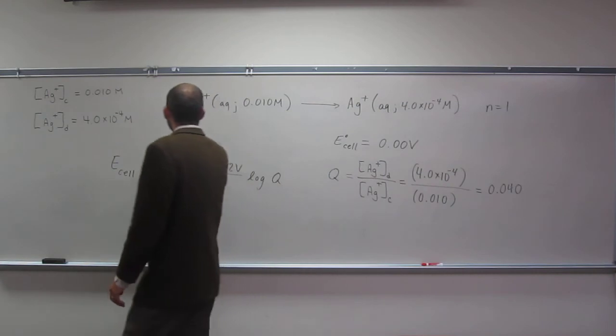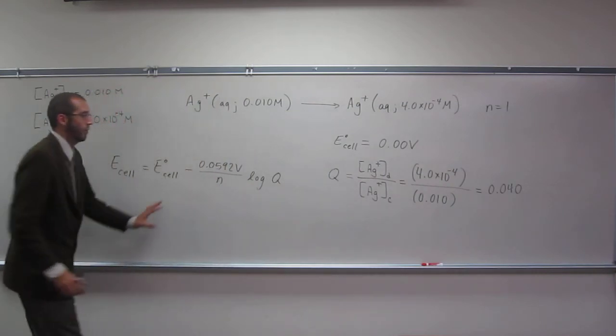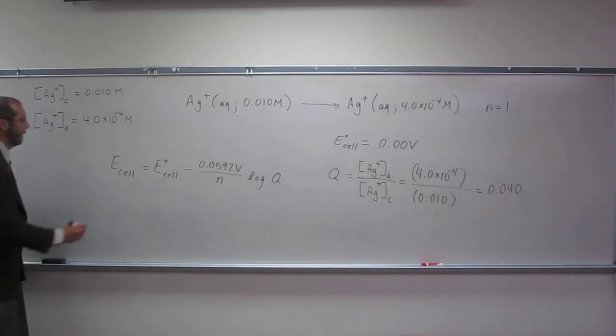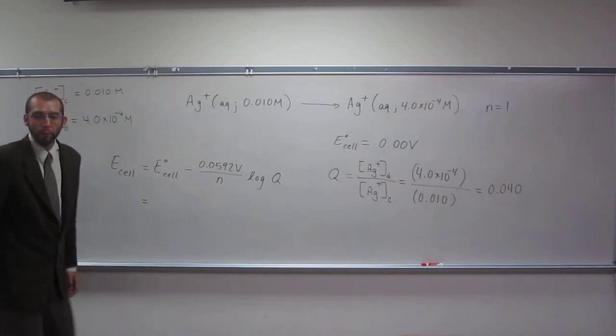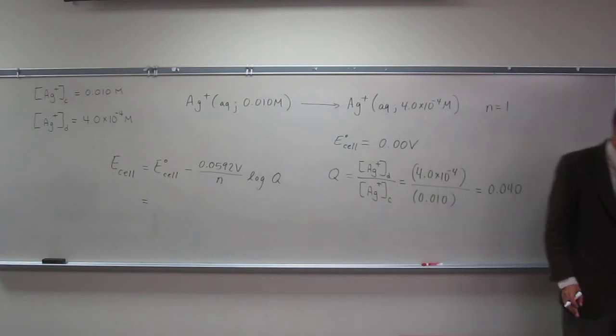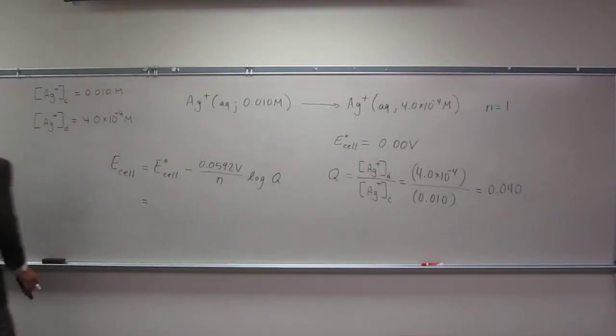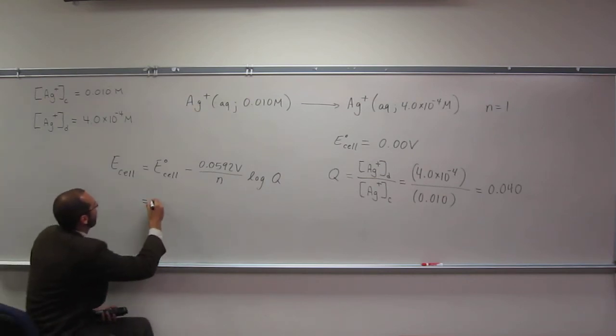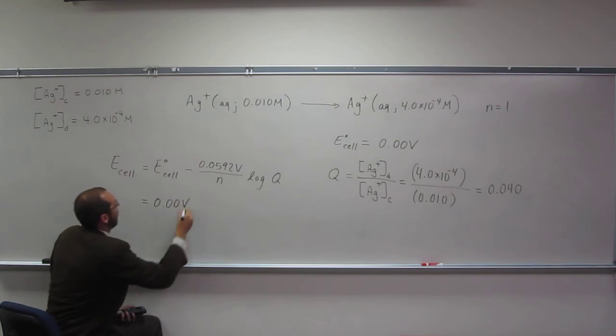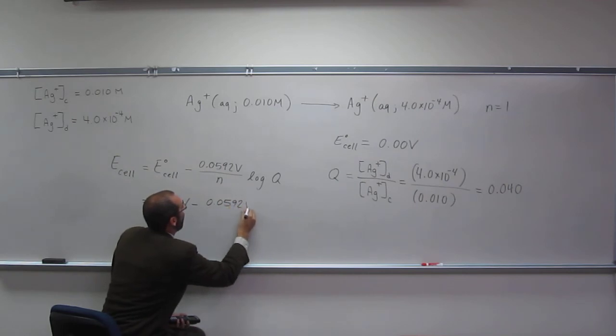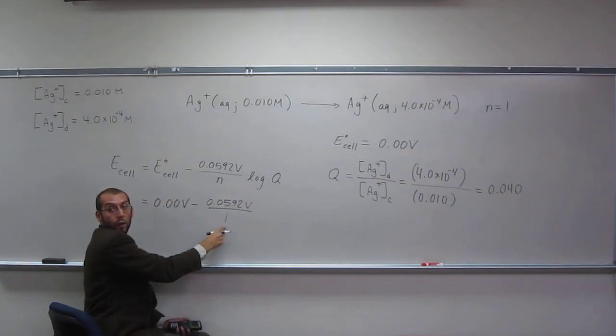So we have Q, we have cell potential, we have N. We should be able to solve what the cell potential is now. So, divided by one.